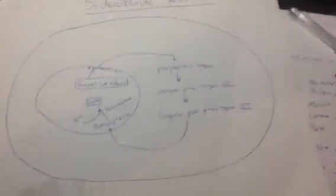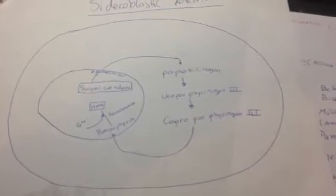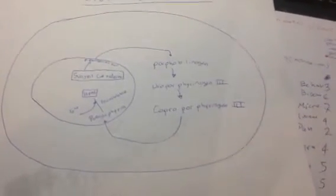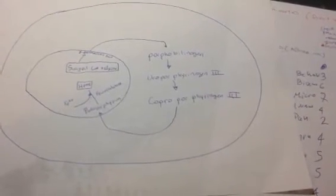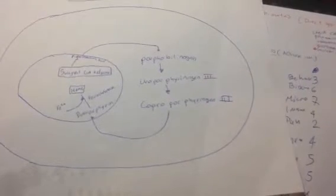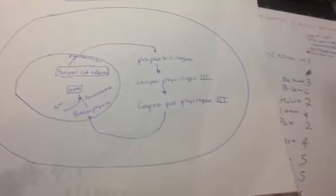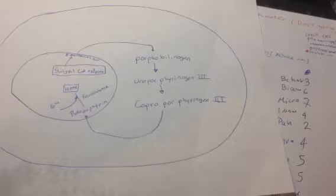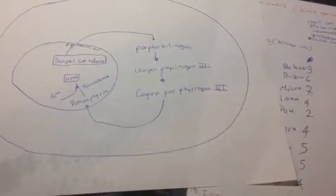So this is the pathophysiology of sideroblastic anemia. Sideroblastic anemia is actually a defect in heme synthesis. Anything that affects hemoglobin or heme synthesis is going to cause a microcytic anemia.